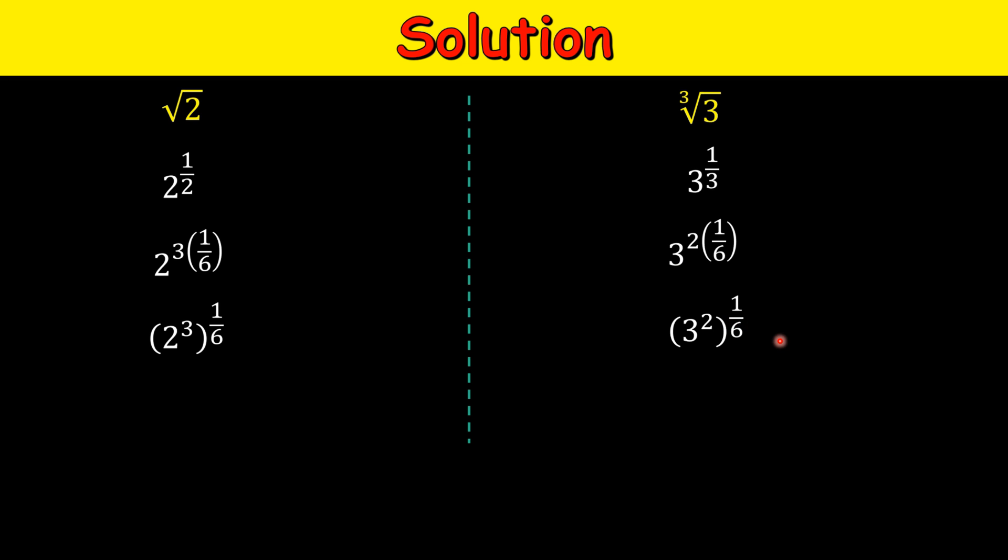Now we have the same power on both sides and some base is there, some numbers larger than 1. So we have here within this we have 8, 8 raised to the power of 1 over 6, and here on the right hand side we have 9 raised to the power of 1 over 6. So clearly,